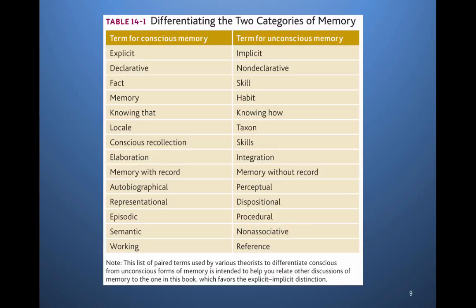To review the two categories of memory and some associated terms: explicit aligns with declarative. This is generally conscious memory for facts — what you think of when you think of memory. You know something happened; there's location information and conscious recollection; you can elaborate on what you know. There's memory with record, autobiographical elements, and representational content. There's episodic memory, meaning it has time and place, and semantic memory — general knowledge and facts that you know.